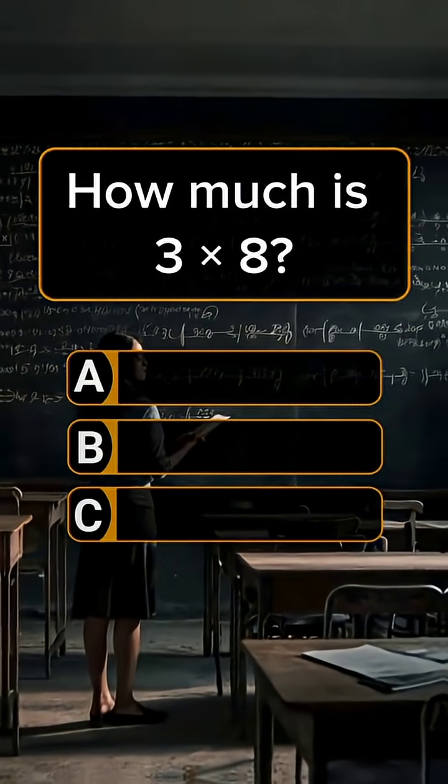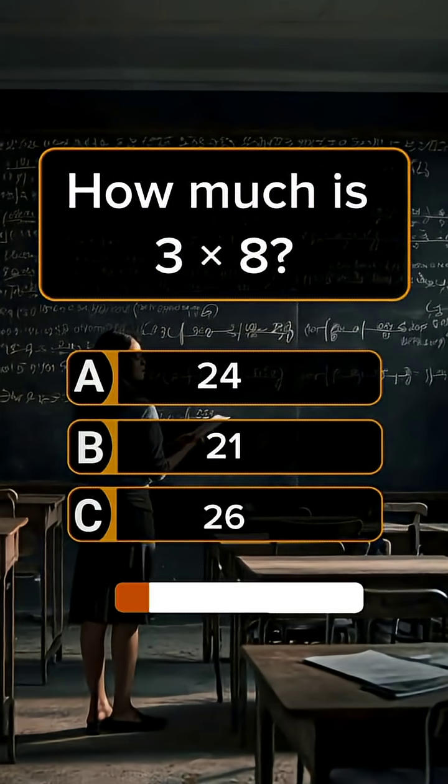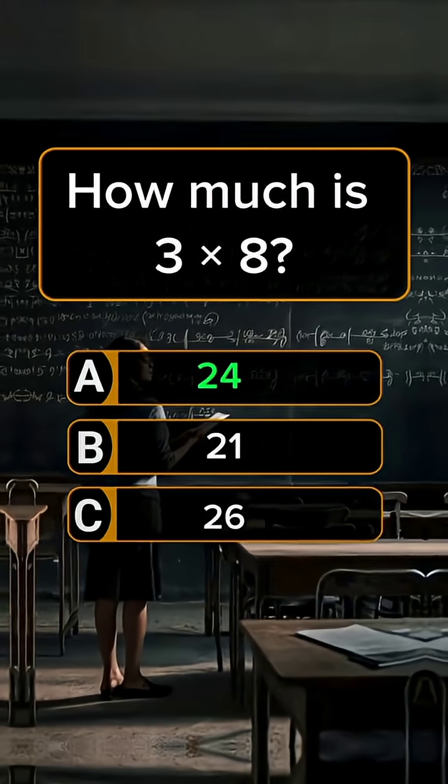Question 1. How much is 3 times 8? Answer A, 24.